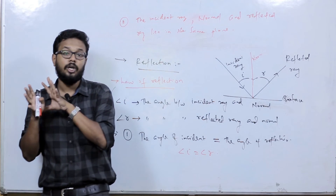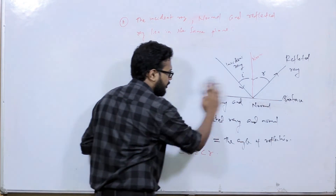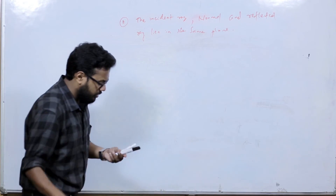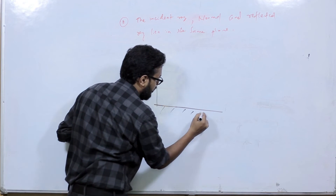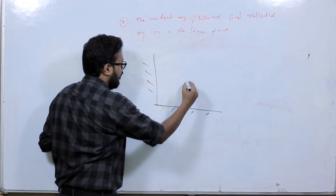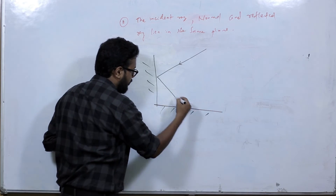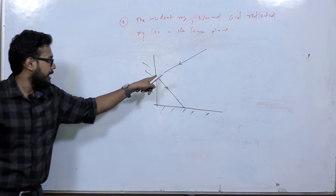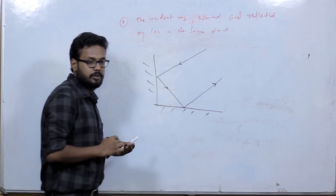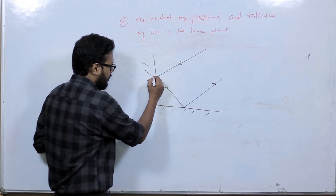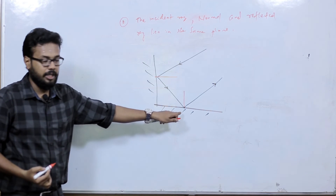If you have a question, you will have two plane mirrors. If you have an incident ray of light, it will reflect. If light is incident on the surface, the reflection follows the law. Here is the normal for each surface.